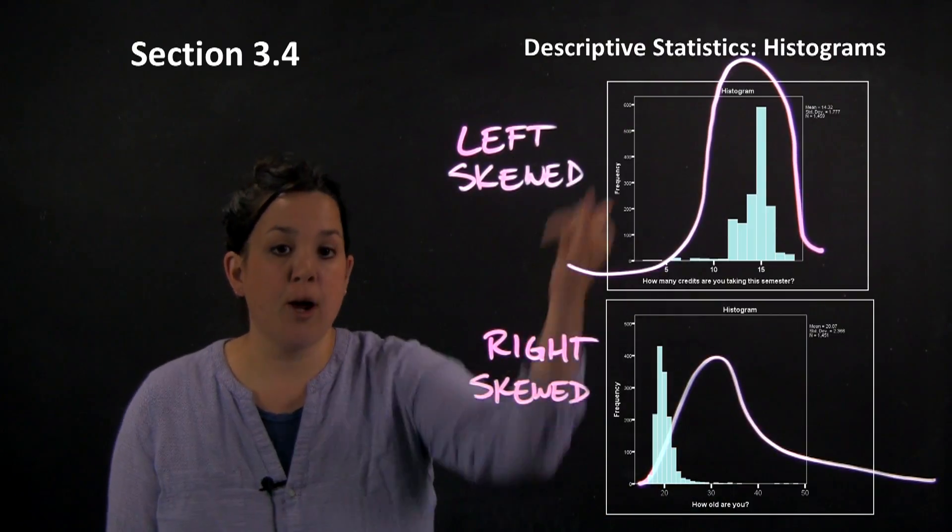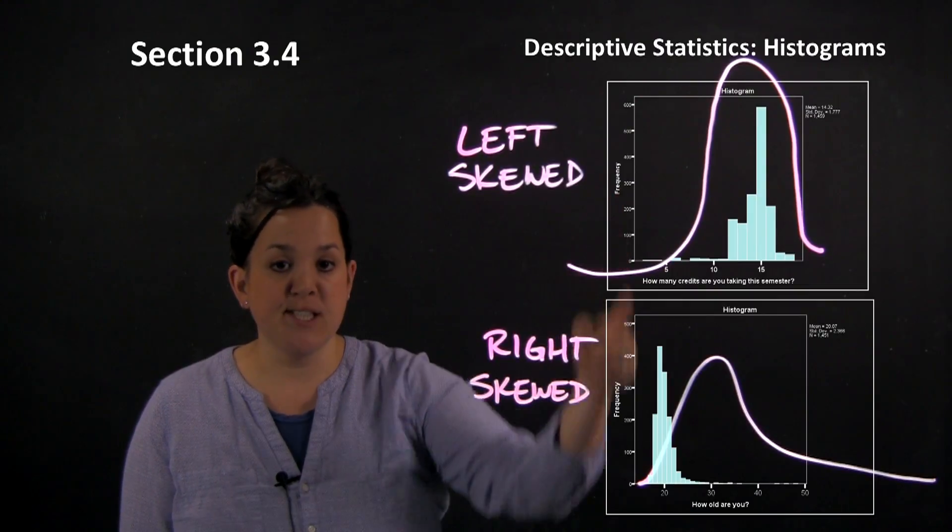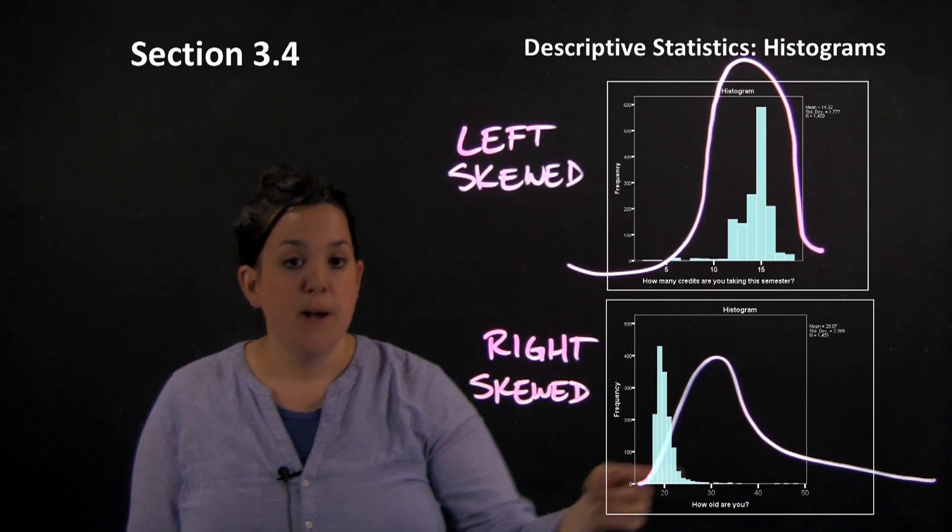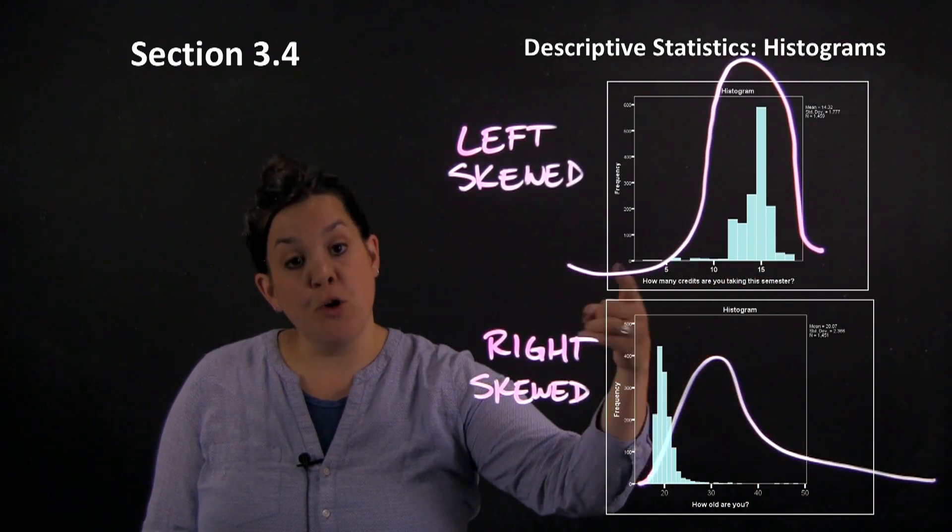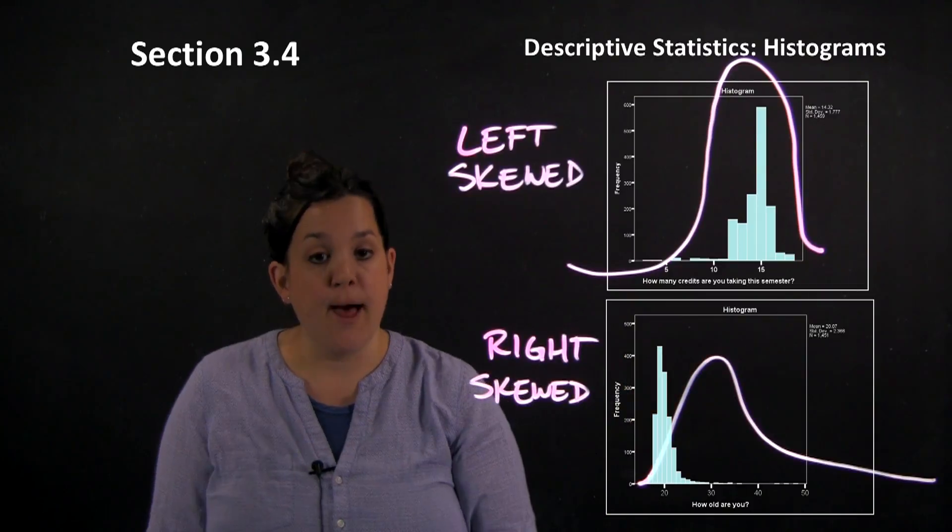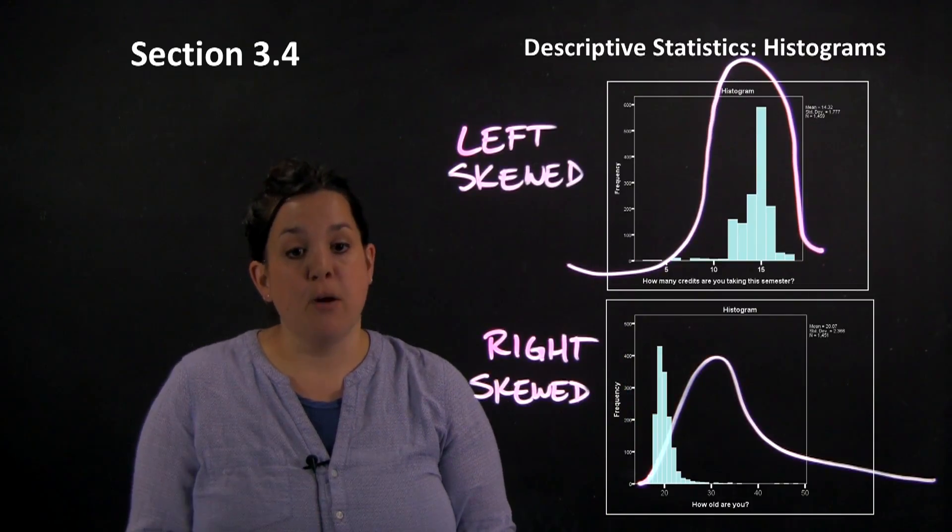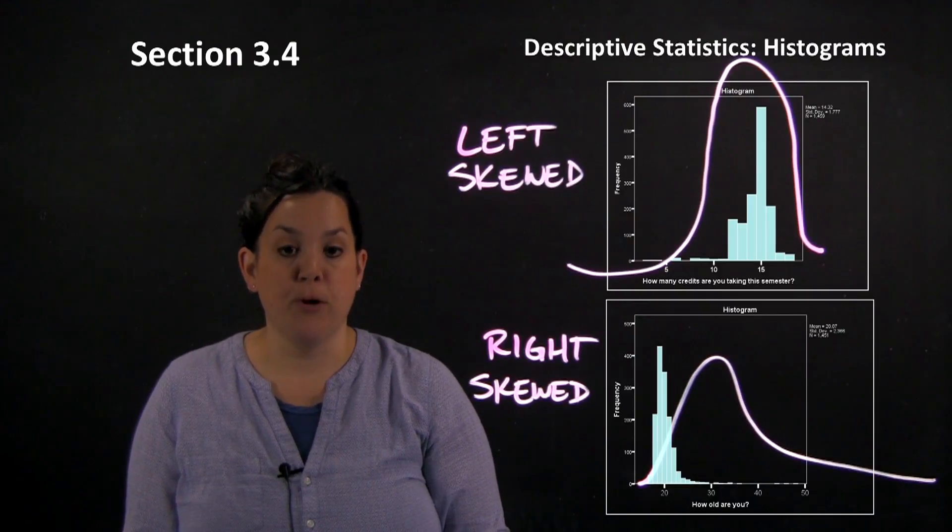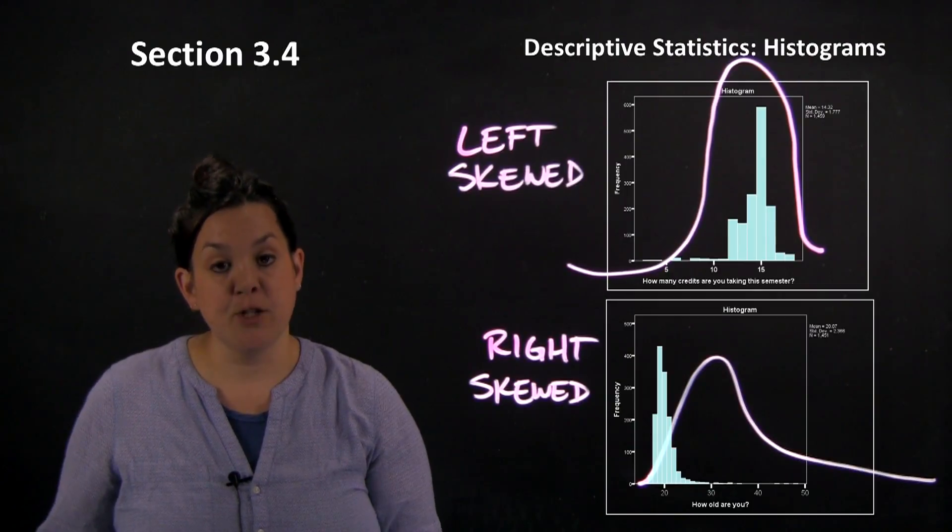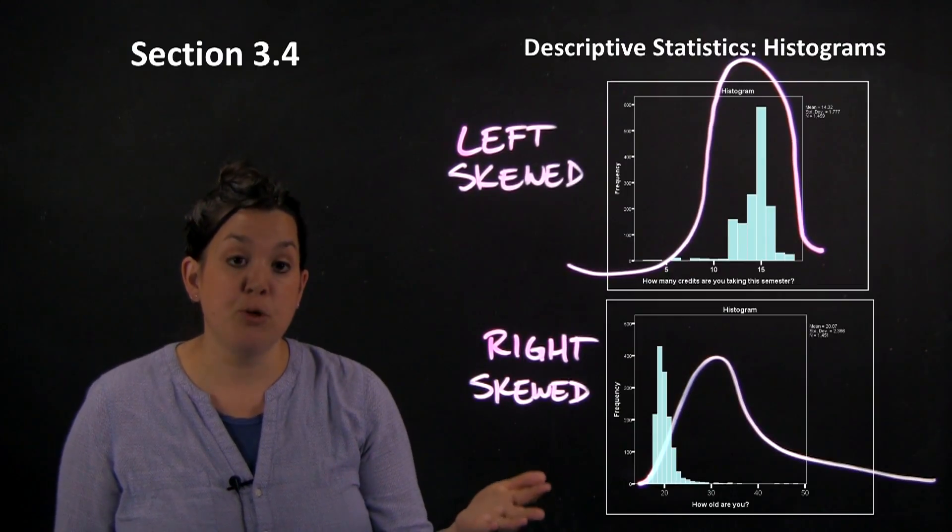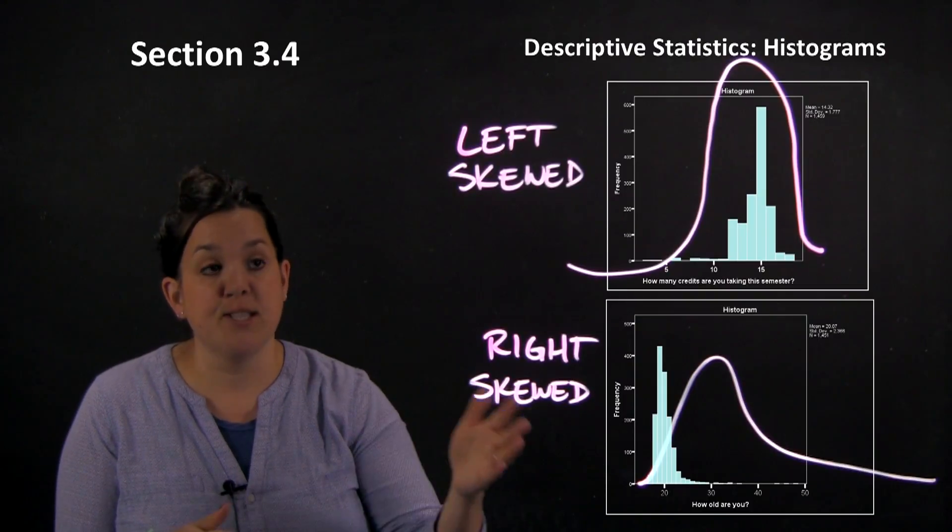For a histogram, that y-axis is going to be the same as a bar graph—frequency or number of people in each group. But remember, for a histogram it's different than a bar graph because here it's showing you a number line, because the horizontal axis is representing one quantitative variable instead of on a bar graph, which is representing a categorical variable. One thing I want you to recognize about histograms is that in terms of the way we describe distributions, a histogram is the best or easiest for being able to see shape.